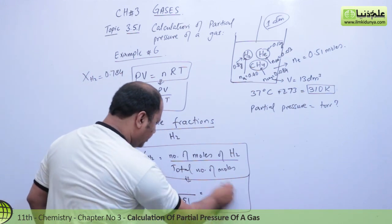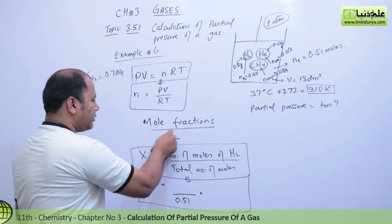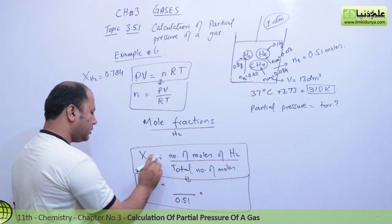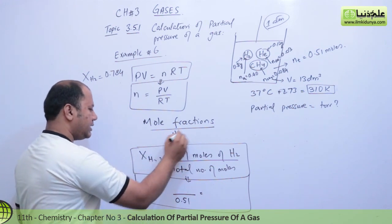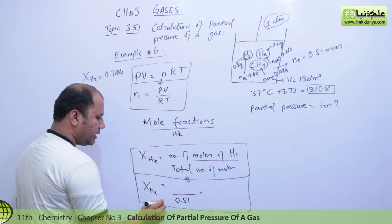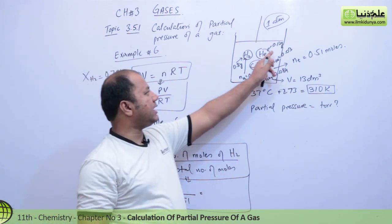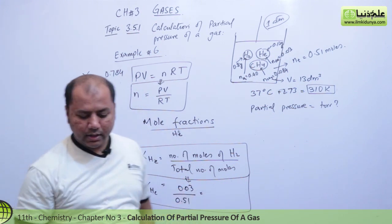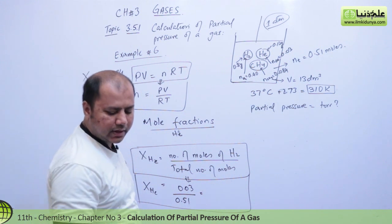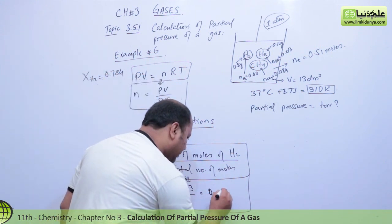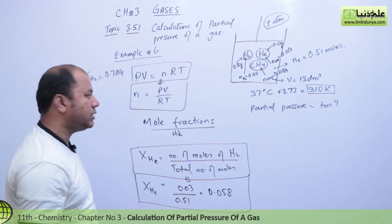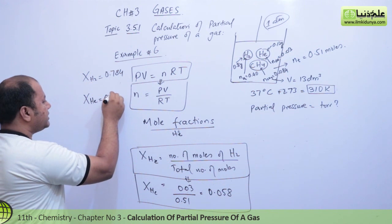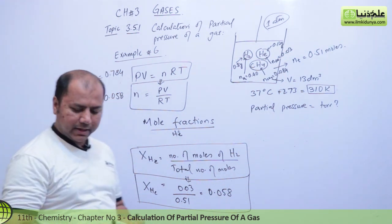In the same way, let's calculate the mole fraction for helium. X(He) = moles of He / total moles = 0.03 / 0.51 = 0.058. So the mole fraction of helium, X(He) = 0.058.